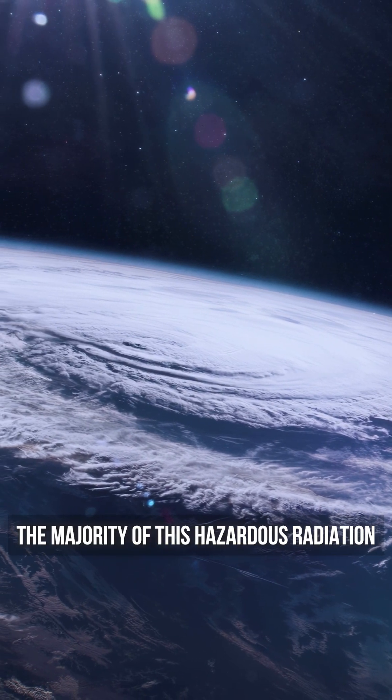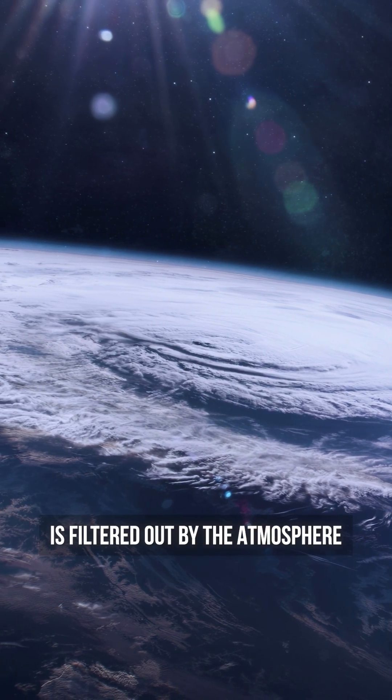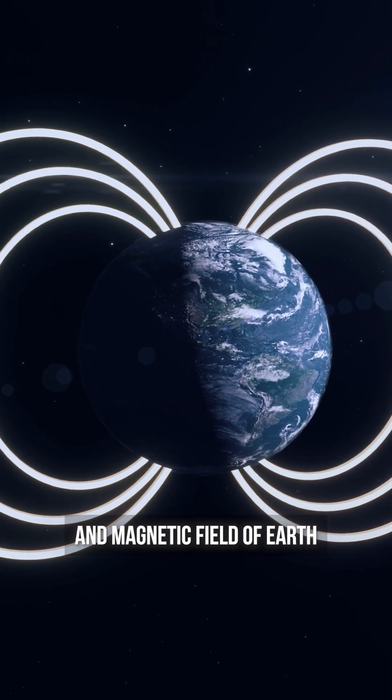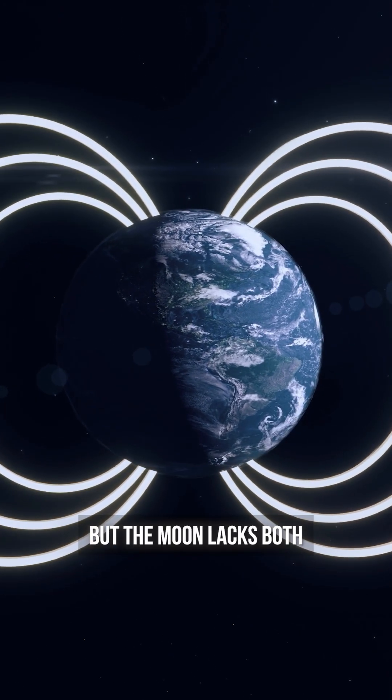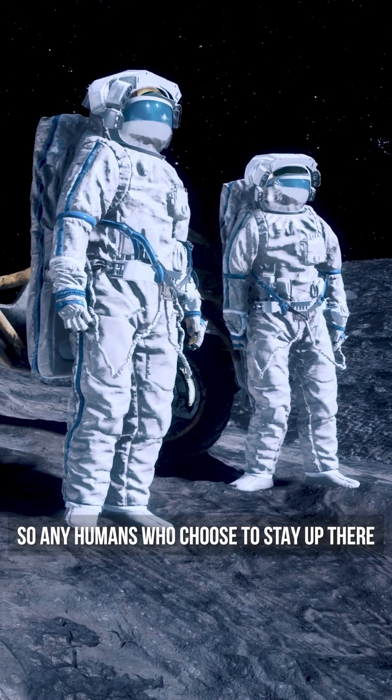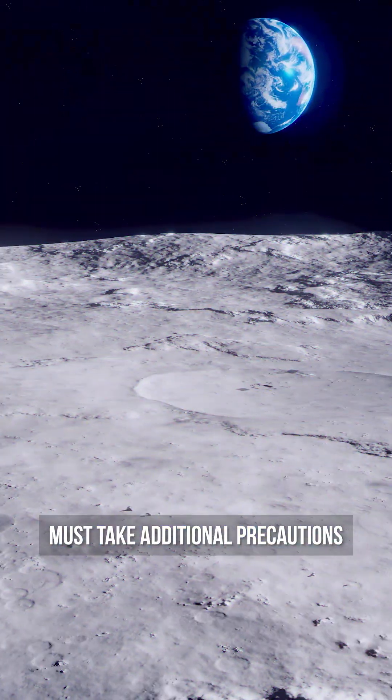On Earth, the majority of this hazardous radiation is filtered out by the atmosphere and magnetic field of Earth. But the moon lacks both, so any humans who choose to stay up there must take additional precautions.